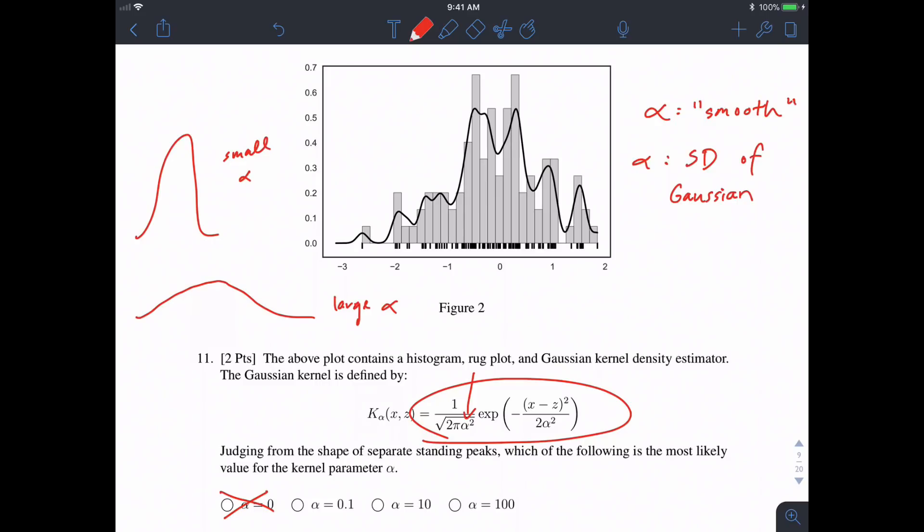It seems like this kernel density estimator follows pretty closely to the heights of the bars, right? It's relatively smooth, but it does have many peaks and crests.